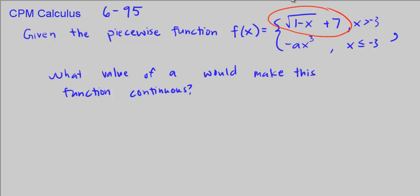when we have this piece of the function, when we get to negative 3, it has to equal this piece of the function when we're also at negative 3.